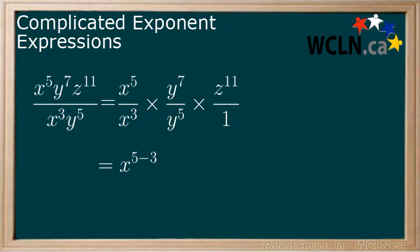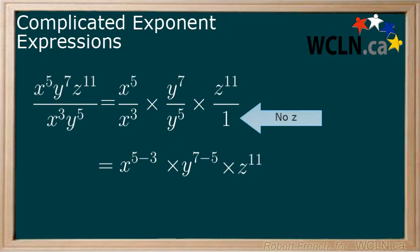Second, let's work with the y variable and we get y to the power of 7 minus 5. Finally, we are left with z to the power of 11. There is no z in the denominator, so this will just stay as z to the power of 11. Now we can bring these back together for our simplified expression.